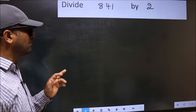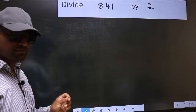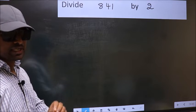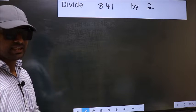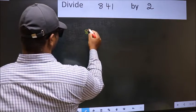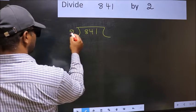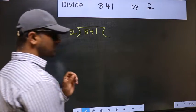Divide 841 by 2. While doing this division, many do this mistake. What is the mistake that they do? I will let you know, but before that we should frame it in this way: 841 divided by 2. This is your step 1.